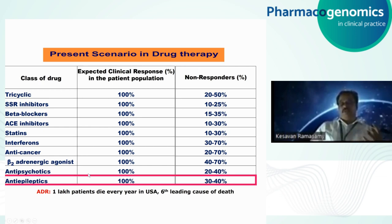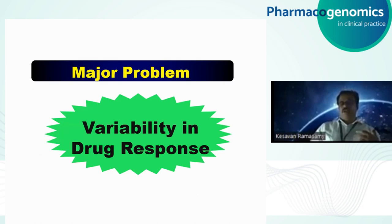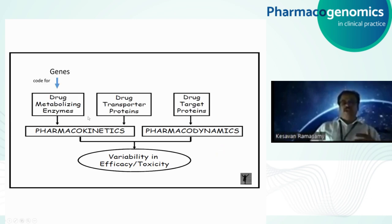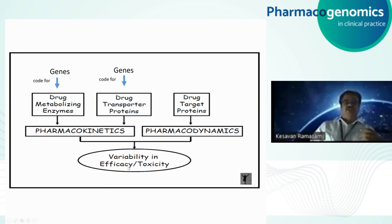For anti-epileptic drugs, one-third of patients are refractory to drug treatment. This gives us an understanding that there is a huge variability in drug response that needs to be addressed. Whenever variability in drug response is encountered, we need to look at the pharmacokinetic and pharmacodynamic profile — including drug metabolizing enzymes and drug transporters — and sequence these genes to identify the reasons for variability in efficacy and toxicity. The study of this genetic variability with reference to toxicity or efficacy is called pharmacogenomics.